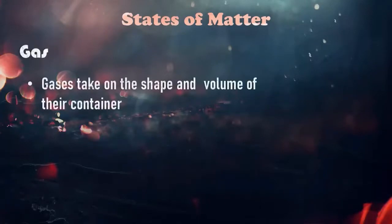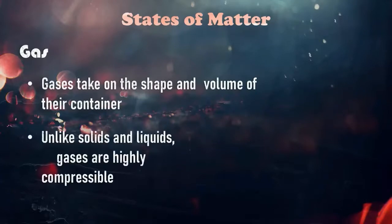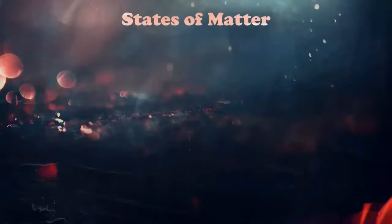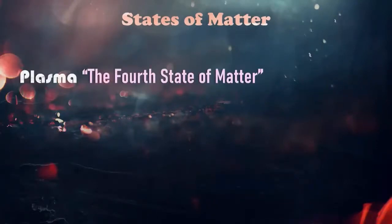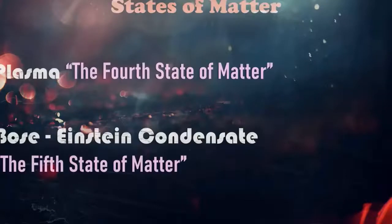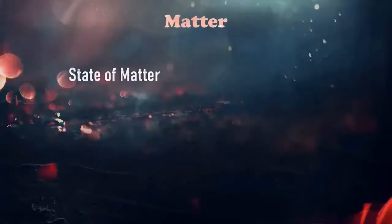Next is gas. Gas takes on the shape and volume of their container. Unlike solids and liquids, gases are highly compressible. Just like balloon, ball, we can compress this kind of object. This time the behavior of an atom is too far from each other. And we have two additional states of matter: plasma and Bose-Einstein condensate. These two were discovered because the behavior of their atoms can't be associated to any of the three common states of matter: solid, liquid, and gas. And these things rarely exist on earth.